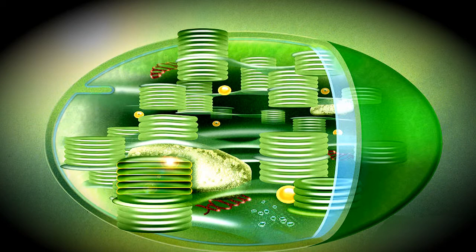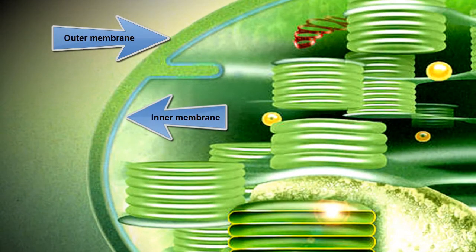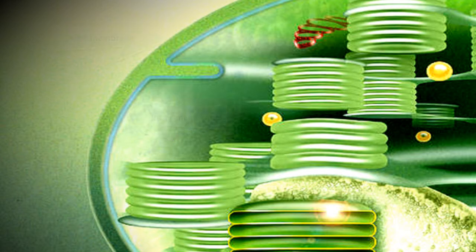Light-dependent reactions of a plant take place within the chloroplast. The chloroplast has an inner and outer membrane. Underneath the inner membrane is where photosynthesis takes place. This space is filled with a colorless fluid called stroma.